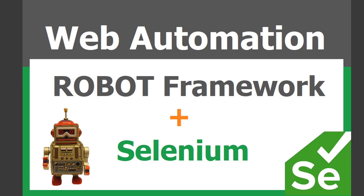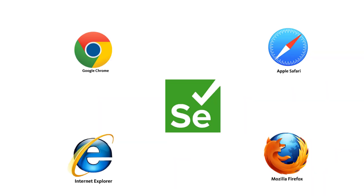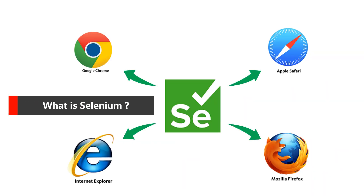So the question arises: what is Selenium? Selenium is a tool that allows us to automate browsers. It is a solution written in Java and it supports Chrome, Firefox, Opera, Safari, Internet Explorer, Edge browser, and many other browsers as well.